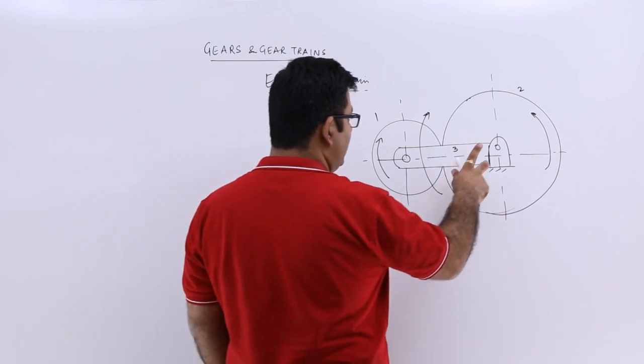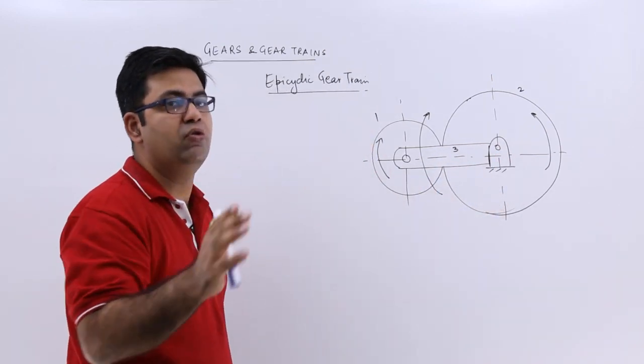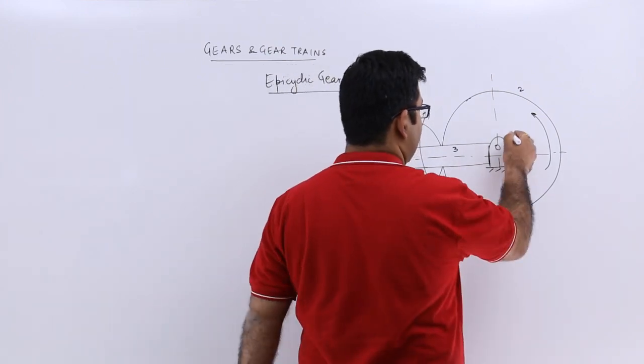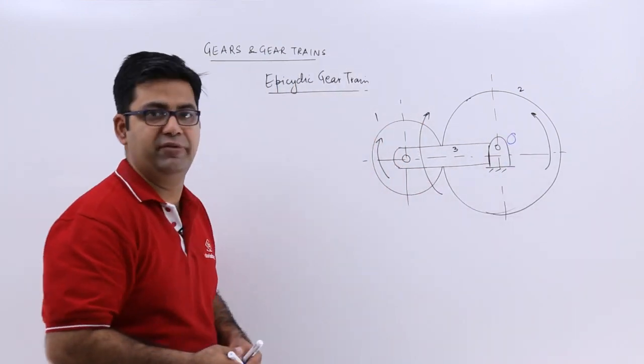Gear 2 is a fixed gear. It means it cannot move its position. It will only rotate about this center of rotation which is O.